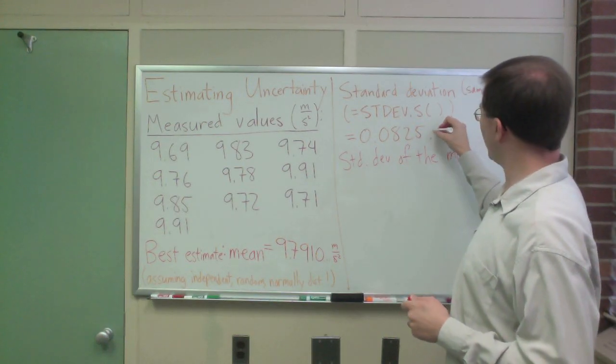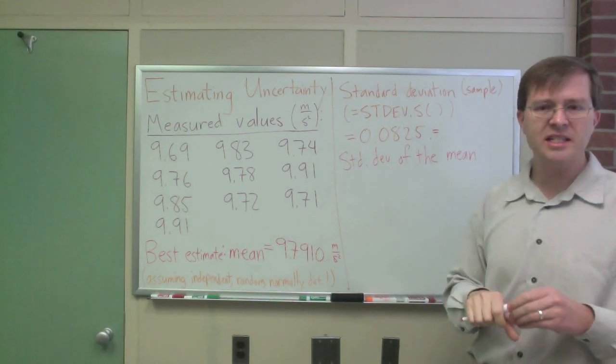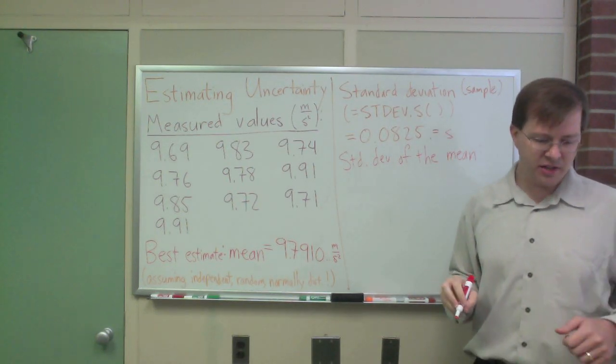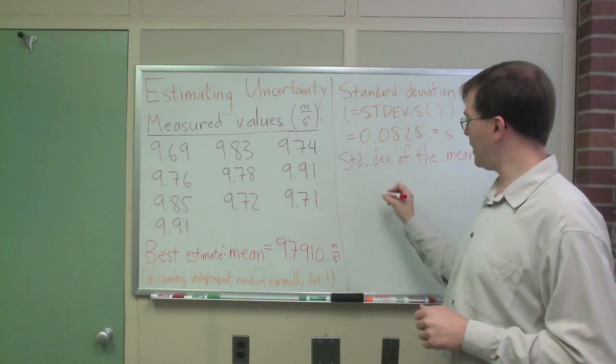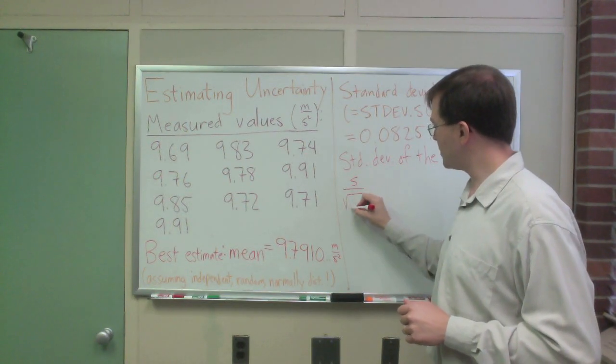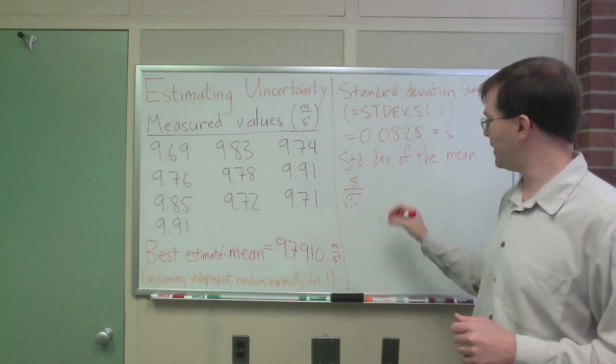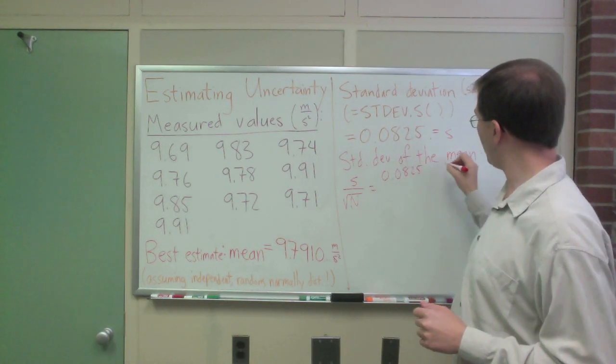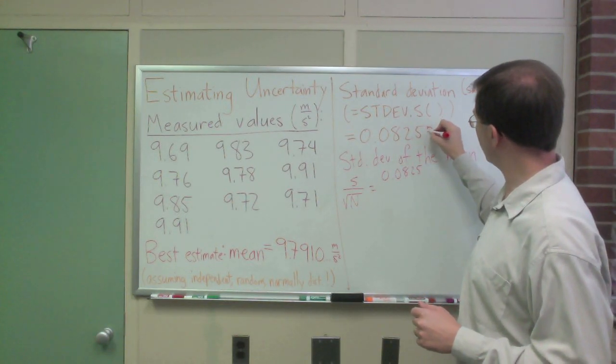Standard deviation of the mean is, a standard deviation, sample standard deviation, is typically written as s, the standard deviation. The standard deviation of the mean is given by s divided by the square root of n, where I've got n data points, so that's 0.0825, oh my goodness, I left out my units, meters per second squared.